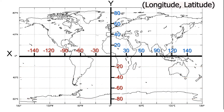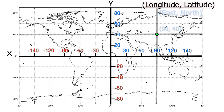To further your understanding, let's make some random points on the grid. In quadrant 1, we see a point here in Asia. Using the X and Y value system, we can label this point as 90 degrees east and 40 degrees north.